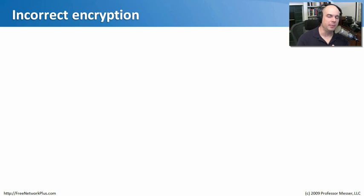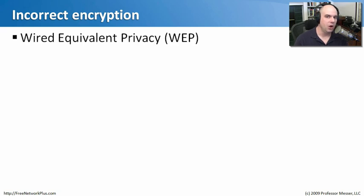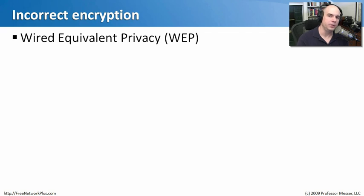If interference isn't your problem and people aren't able to communicate on the network, your issue may be associated with the encryption type you're using. You need to make sure all devices on your network are using the same encryption type, configured exactly the same way. One encryption type that's no longer used because it has cryptographic problems is called Wired Equivalency Privacy, or WEP. Don't use WEP.